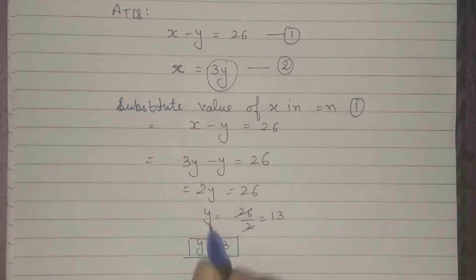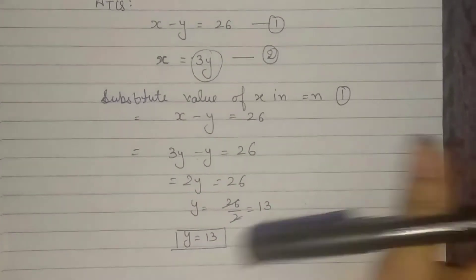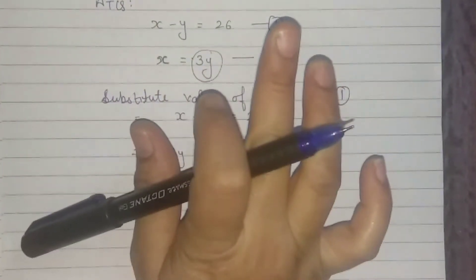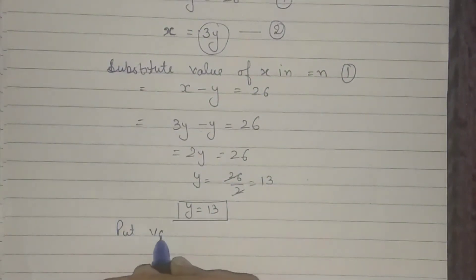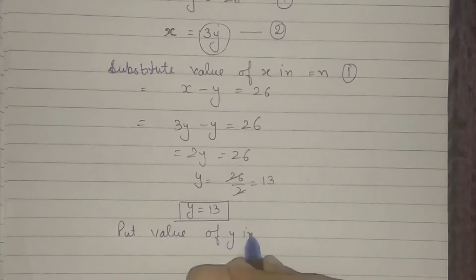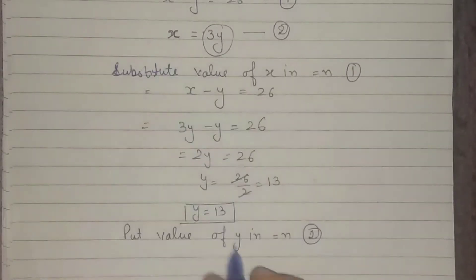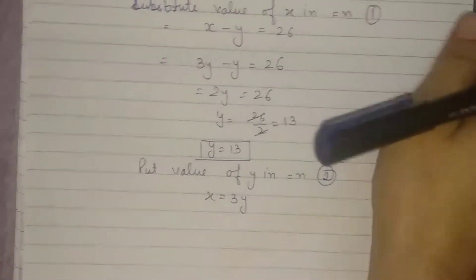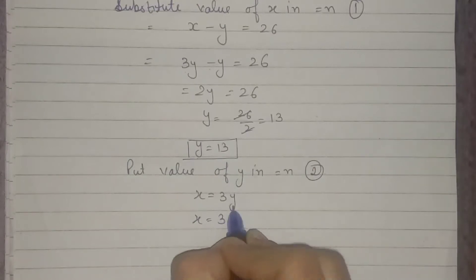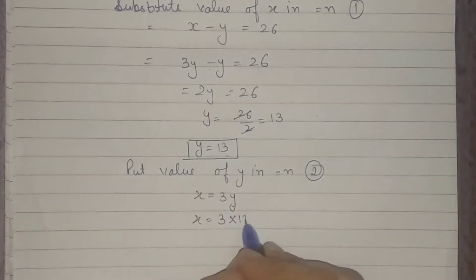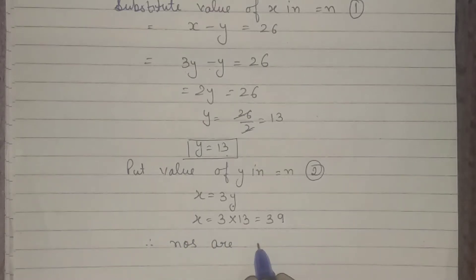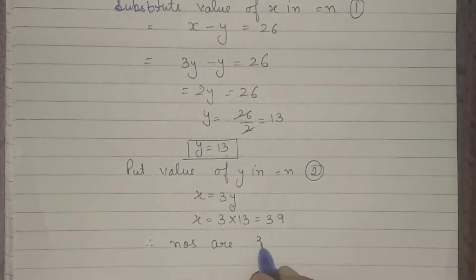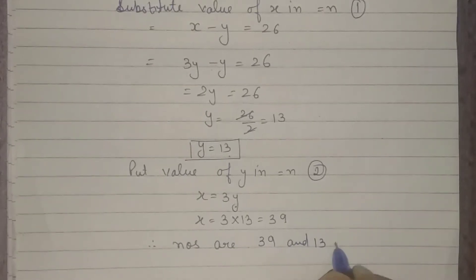Now we have found one number: y equals 13. Next, to find x, we substitute the value of y into equation 2. So x equals 3y means x equals 3 into 13, that is 39. Therefore the two numbers are 39 and 13. This is your answer.